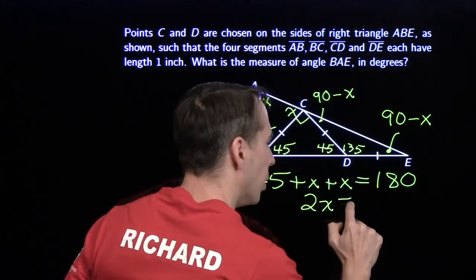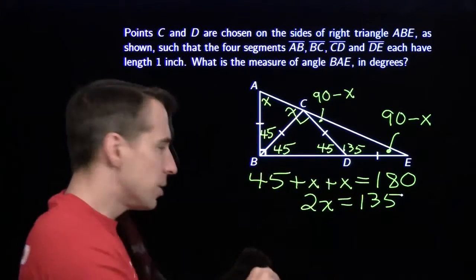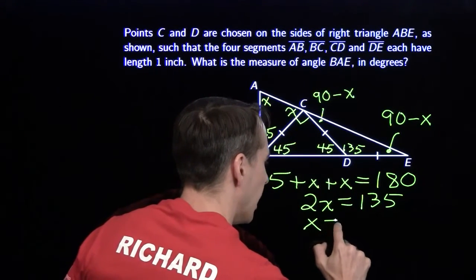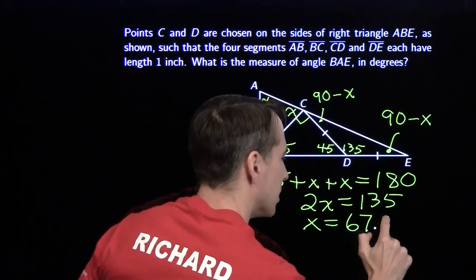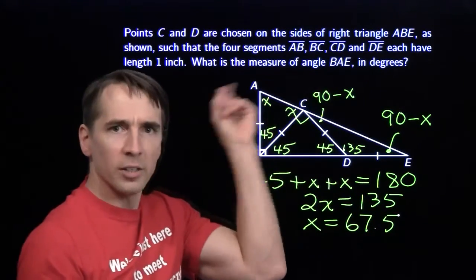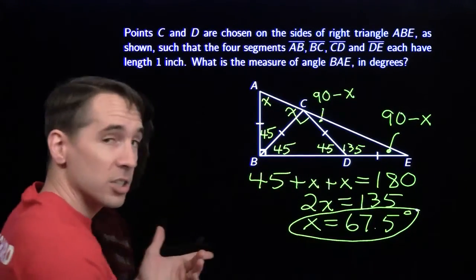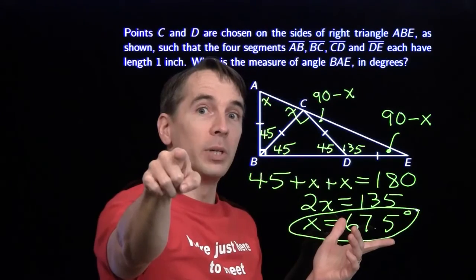Now over here I can combine these two x's and get 2x. Subtract 45 from both sides. I get 135. Divide both sides by 2. And we get our answer. x is 67.5. And since we used the variable as the thing we actually wanted to find, we can just write this down as our answer. And we're all finished. And that one was for you, Team Puerto Rico.